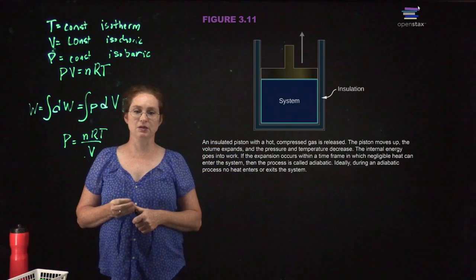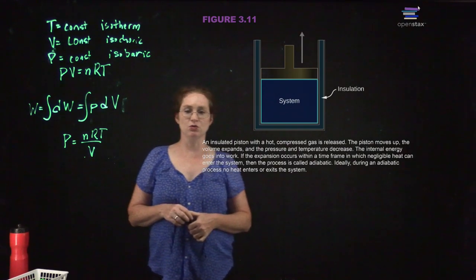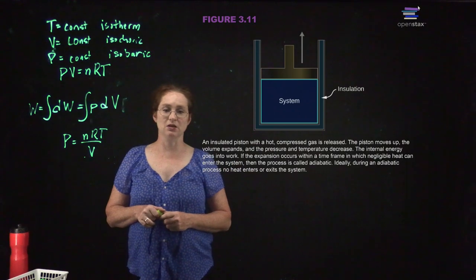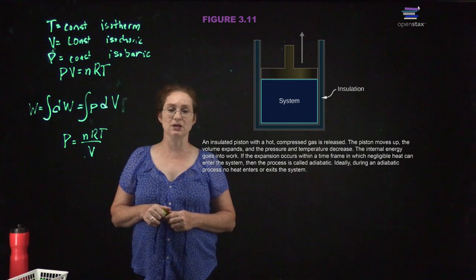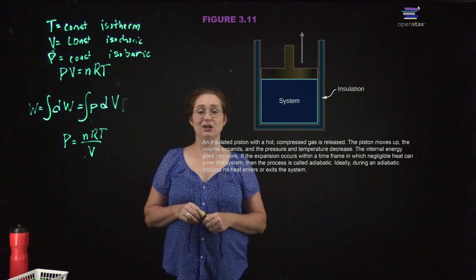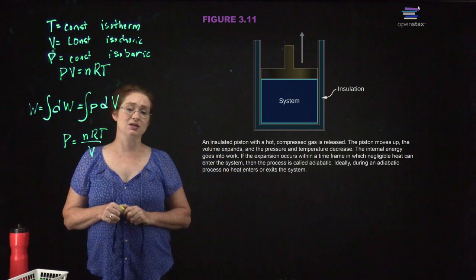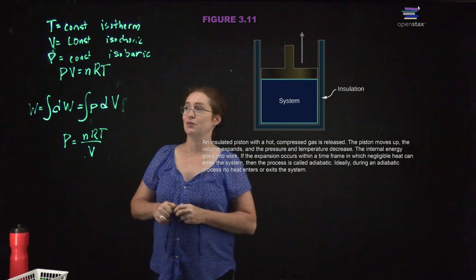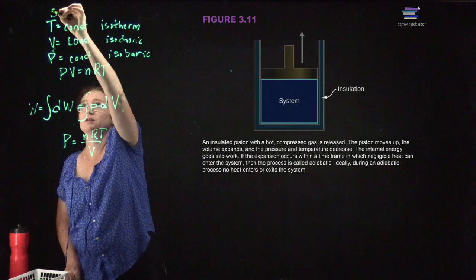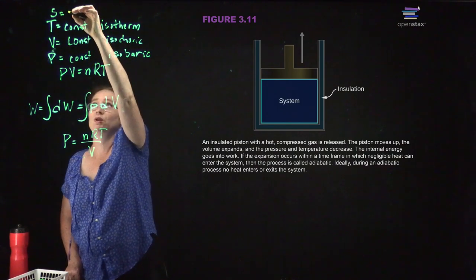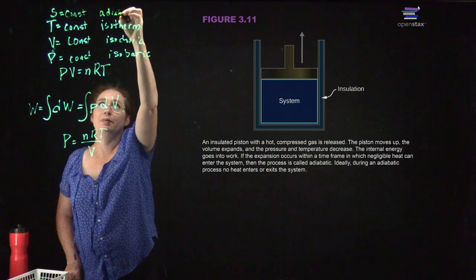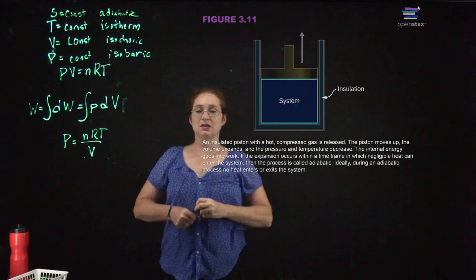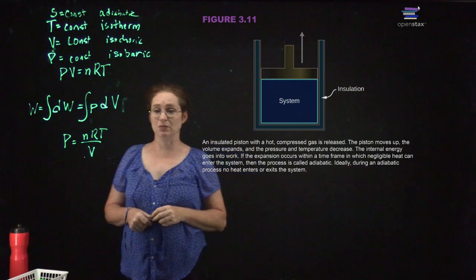Here you have an insulated piston with some hot compressed gas. The piston moves up, the volume expands, and the pressure and temperature decrease — the internal energy goes to work. If the expansion occurs within a time frame in which negligible heat can enter the system, then the process is called adiabatic. Ideally, during an adiabatic process, no heat enters or exits the system. We use S to refer to entropy — if entropy is constant, we call this adiabatic — meaning there's no heat exchange between the system and its environment.